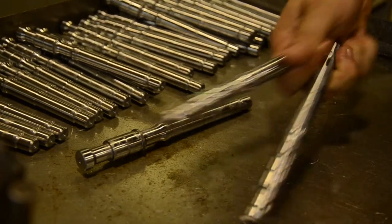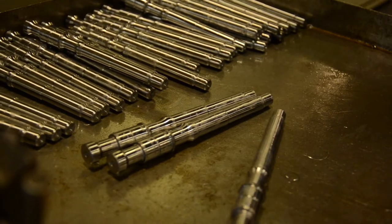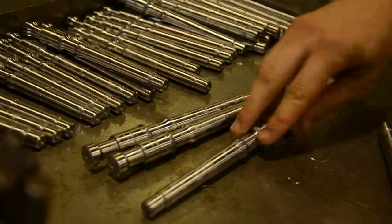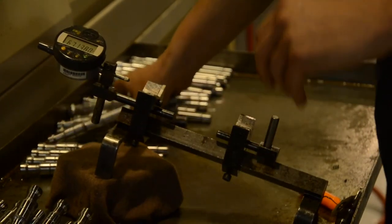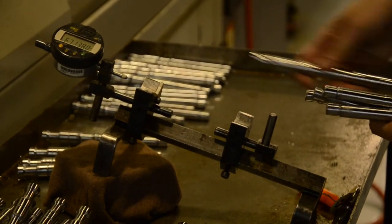These machines can make parts up to an inch and a quarter in diameter and 36 inches in length. Both ends of a part can be machined during a single cycle due to the machine's sub-spindle.